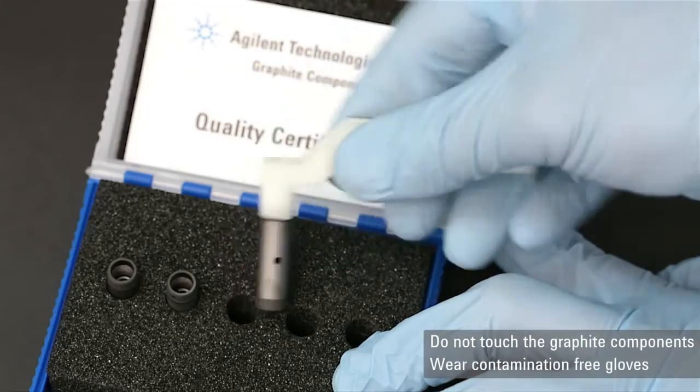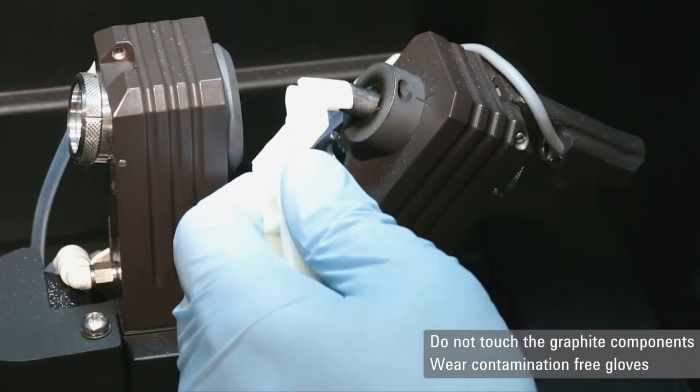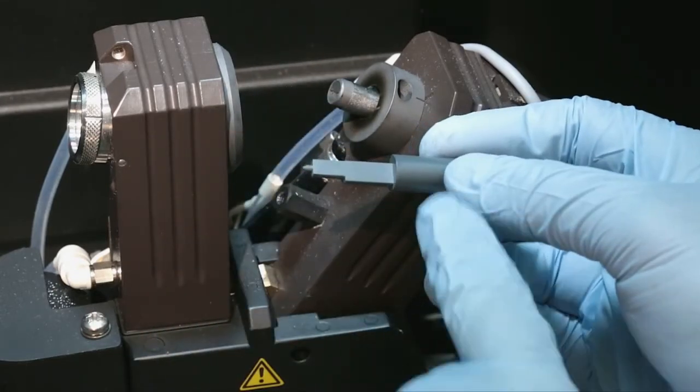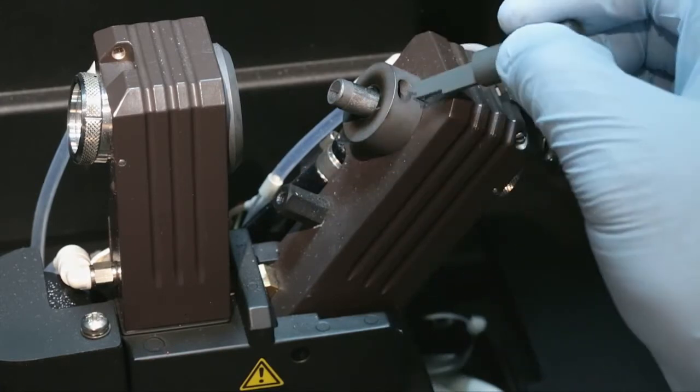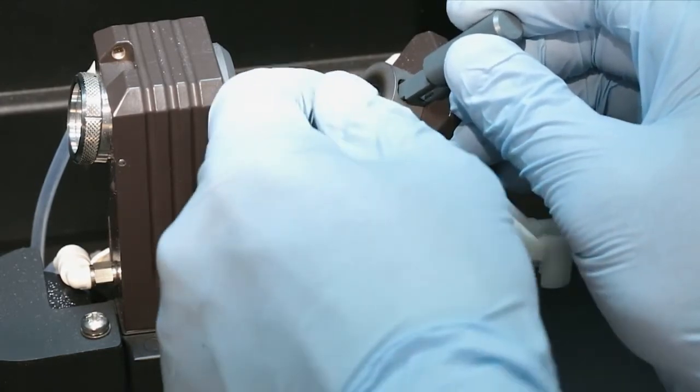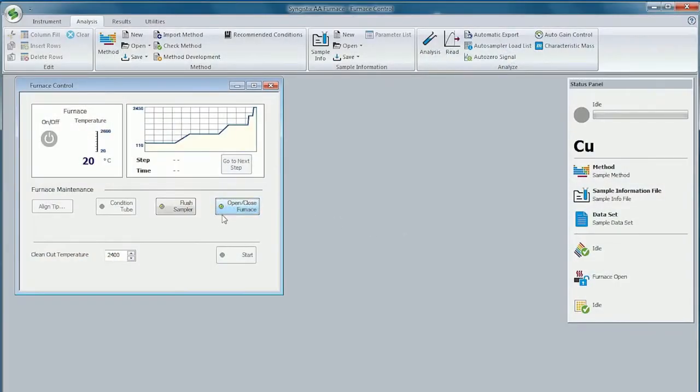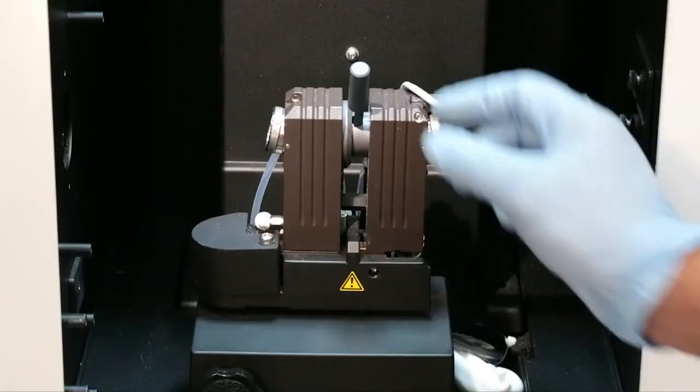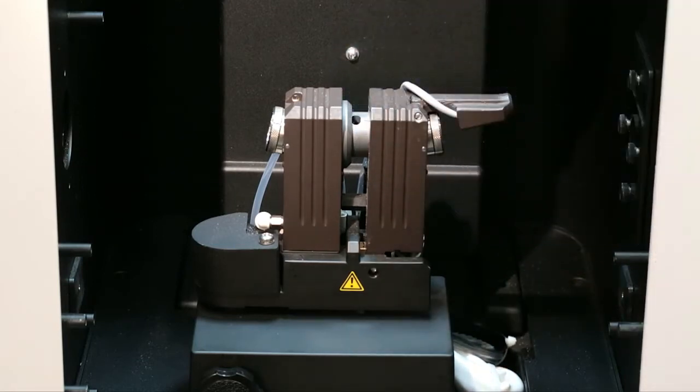Insert the new graphite tube into the right-hand side of the furnace contacts. With the flat side of the alignment tool facing left, insert the tool into the sample injection port and align the graphite tube. Click the open/close button in the furnace control window to close the furnace. Remove the alignment tool and check the alignment of the furnace.